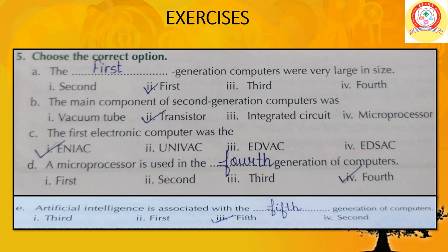C: The first electronic computer was — answer: ENIAC. D: A microprocessor is used in the dash generation of computers — answer: Fourth generation. A microprocessor is used in the fourth generation of computers. E: Artificial intelligence is associated with the fifth generation of computers.